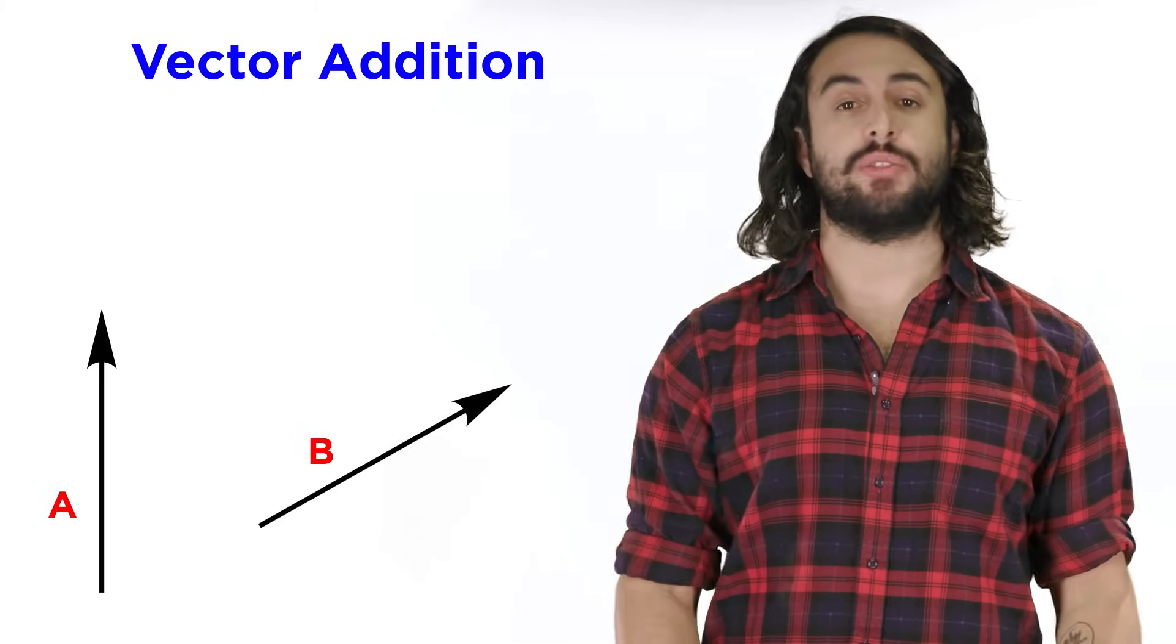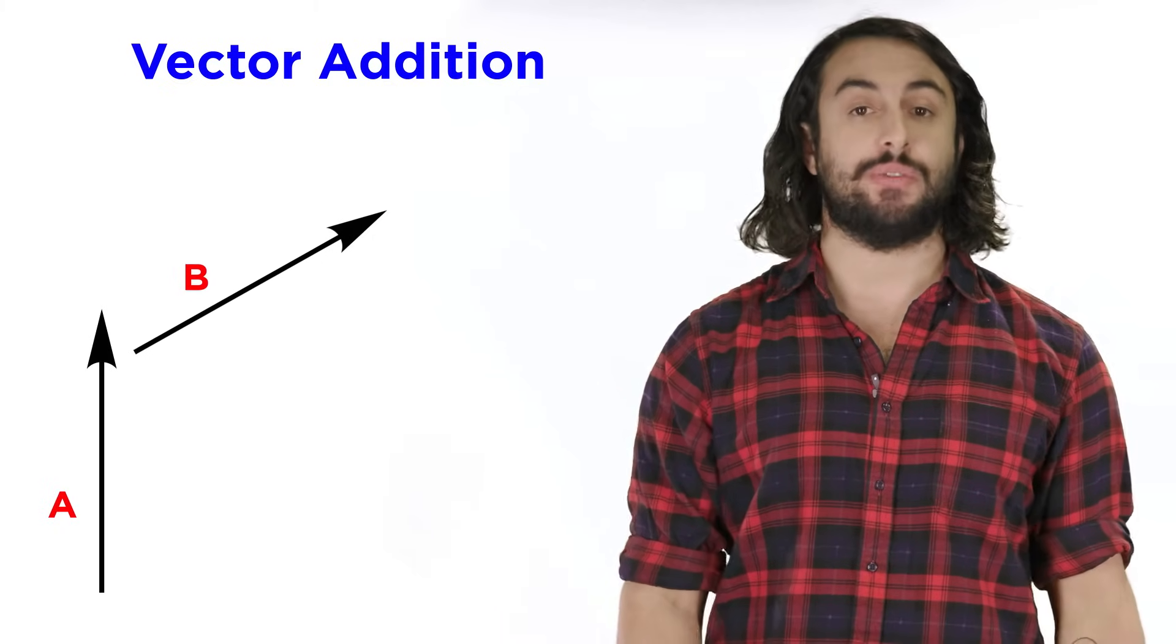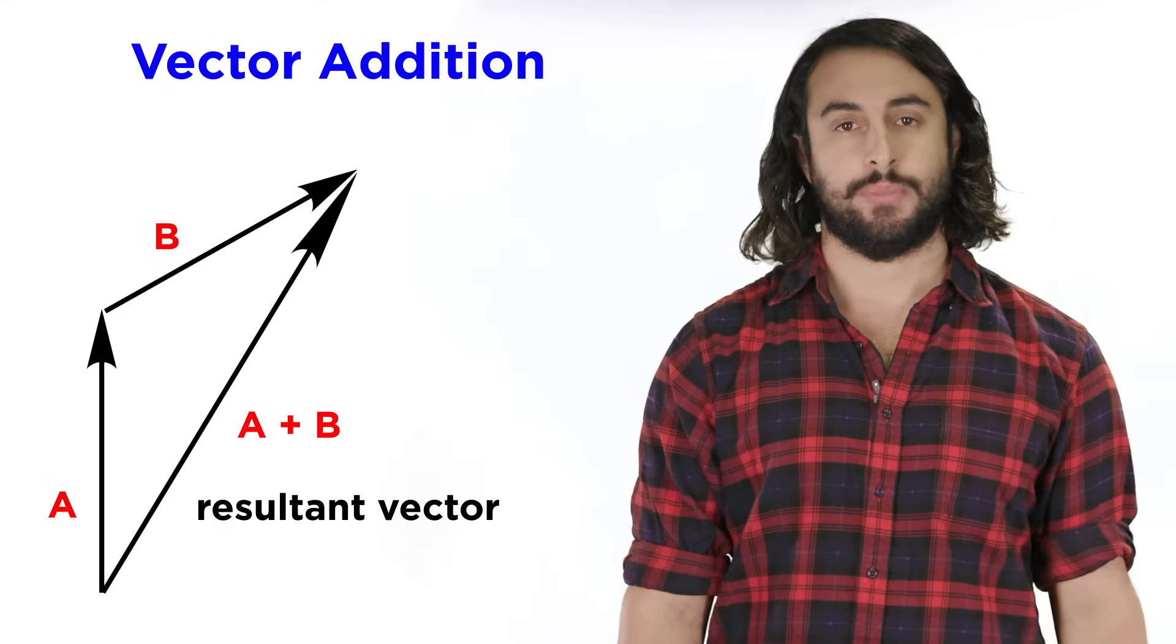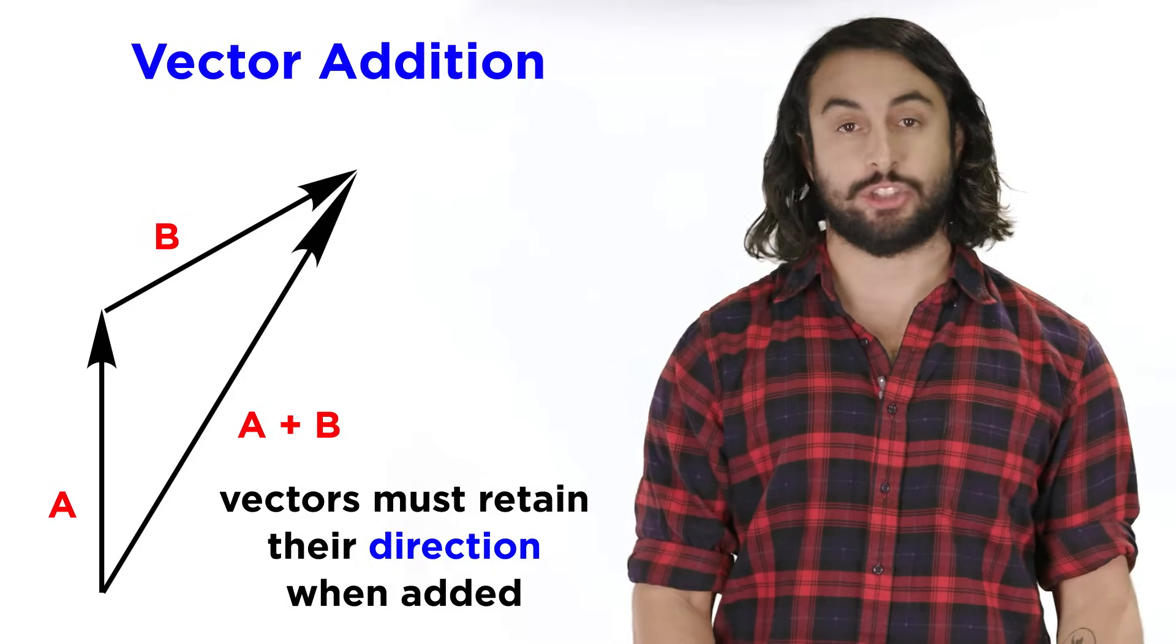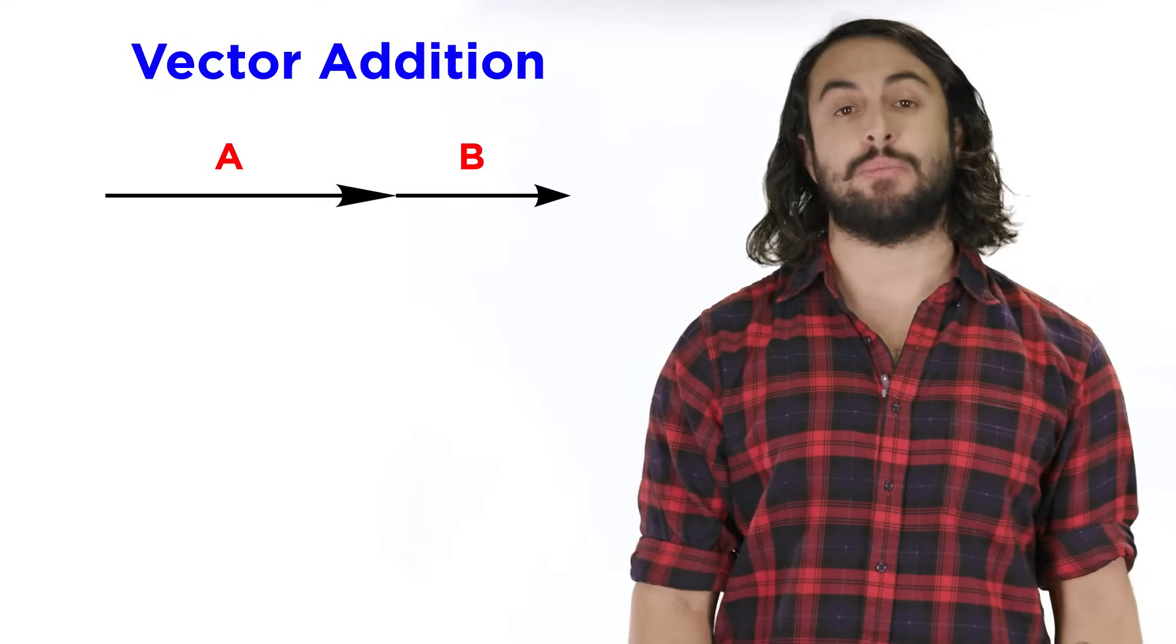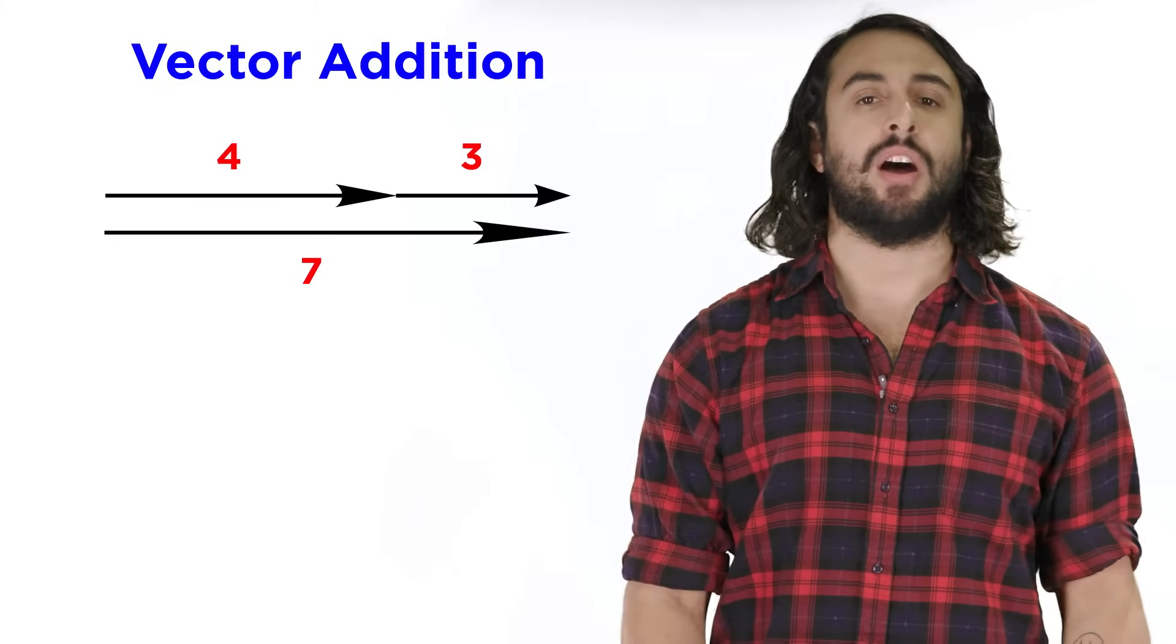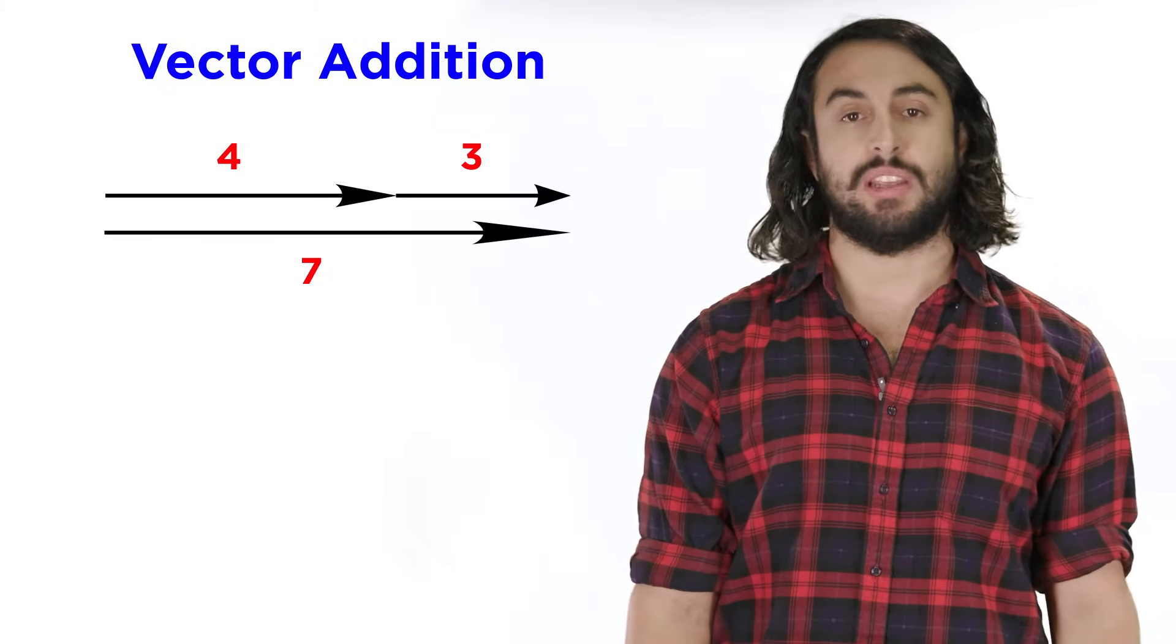If we want to add two vectors together, it's pretty simple. We just make the second vector start where the first vector ends, and then create a new resultant vector that goes from the start of the first to the end of the second. In lining up two vectors, we have to make sure they retain their direction, as that is important information. If the vectors point in the same direction, their sum will just be a longer vector, and the magnitude of this resultant vector will simply be the sum of the magnitudes of the original vectors. So in this case, four plus three equals seven.